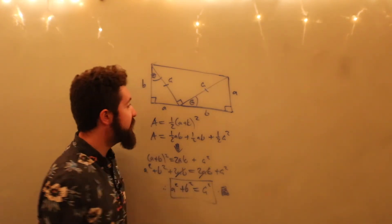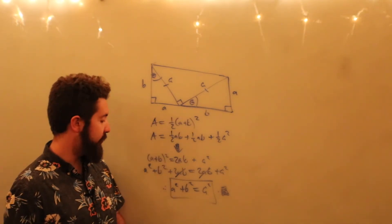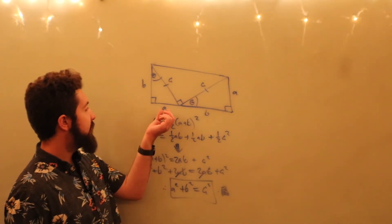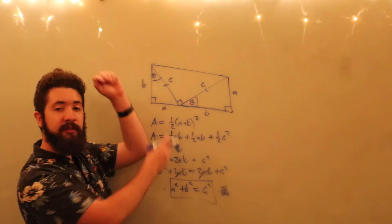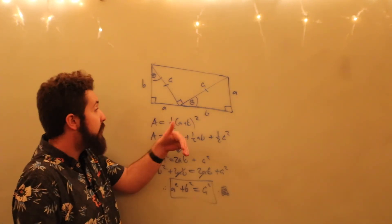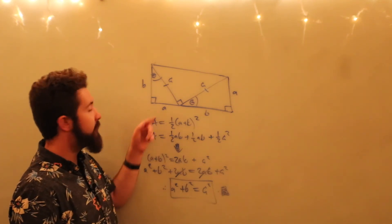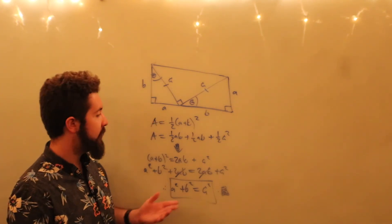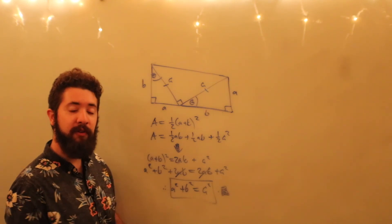And the proof is done. By considering the area of a trapezoid, we have shown that the length of a hypotenuse of a right triangle squared is equal to the sum of the squares of the lengths of its legs. How about that? And this is due to James Garfield, the U.S. President.